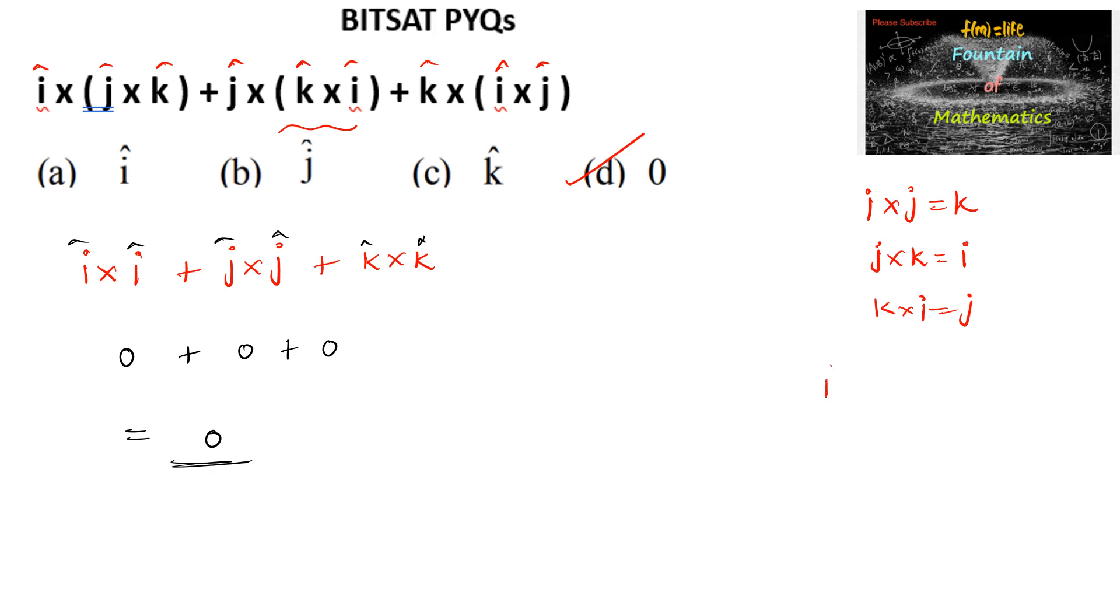And here i cross i is 0 because the angle between the same vectors is 0, and hence sine 0 is 0. So option D is the answer.